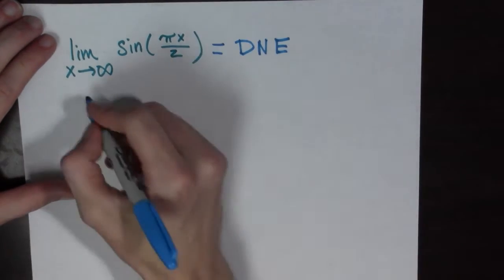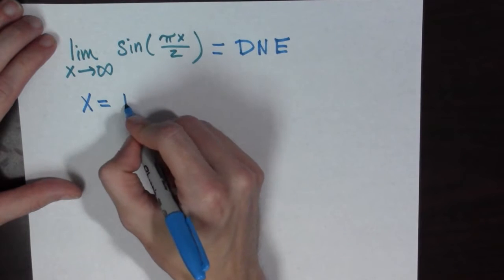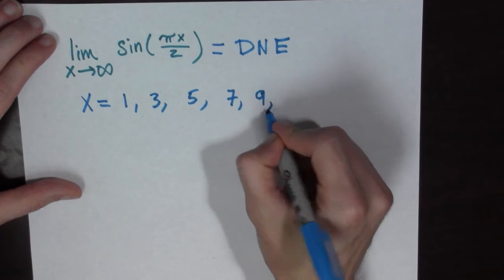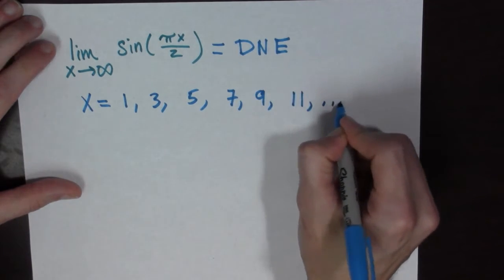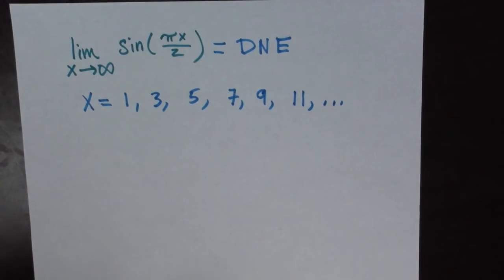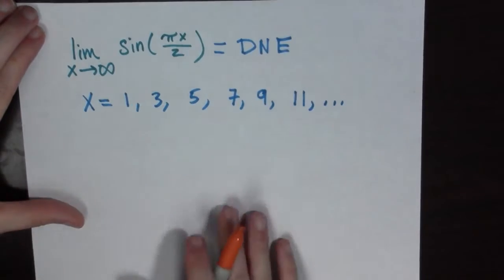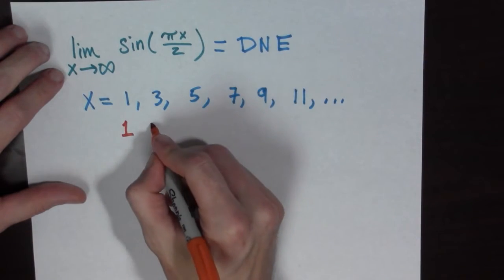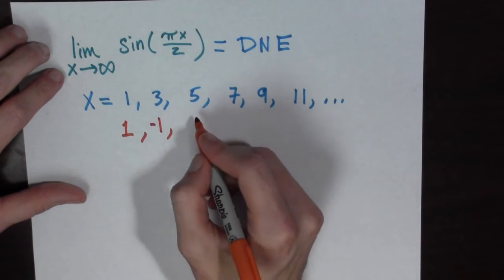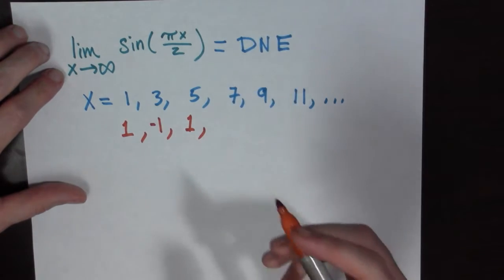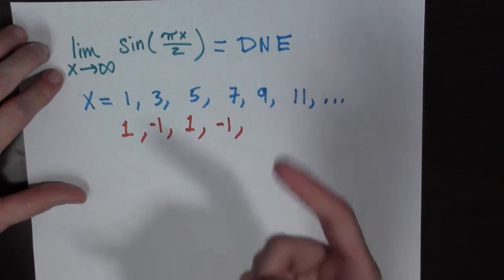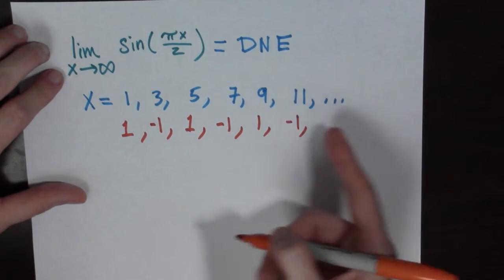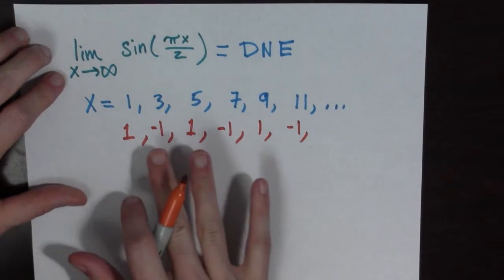What if we set x equal to 1, 3, 5, 7, 9, and 11, and so on — basically odd numbers. What happens to the value of this function? Sin of pi over 2 is 1. Sin of 3 pi over 2 is negative 1. Sin of 5 pi over 2 is 1. Sin of 7 pi over 2 is negative 1. Sin of 9 pi over 2 is 1. Sin of 11 pi over 2 is negative 1, and so on. So we're alternating between 1 and negative 1.